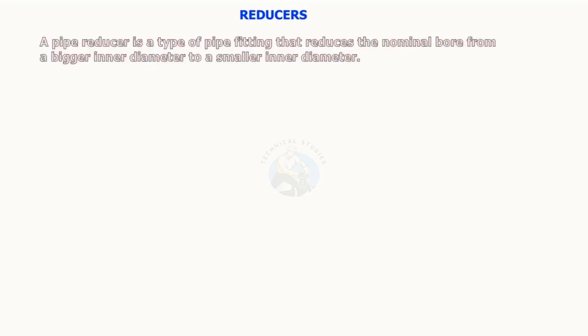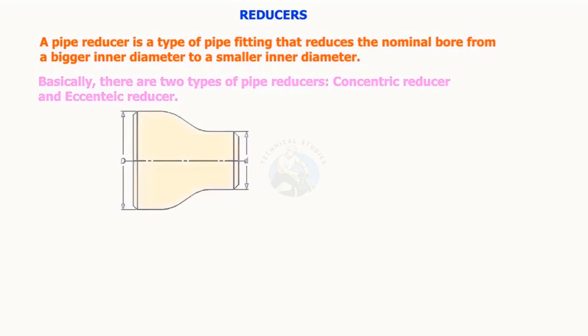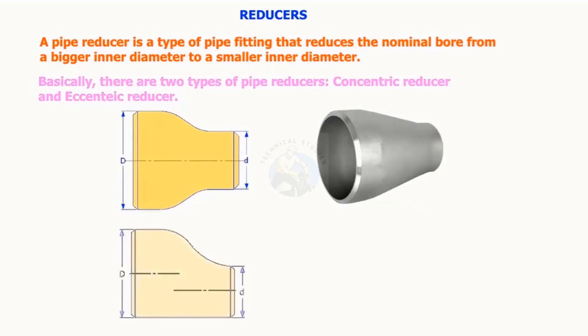A pipe reducer is a type of pipe fitting that reduces the nominal bore from a bigger inner diameter to a smaller inner diameter. Basically, there are two types of pipe reducers: concentric reducer and eccentric reducer.